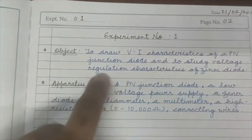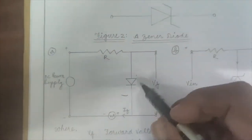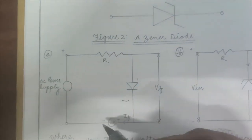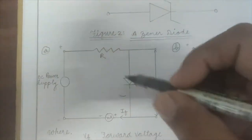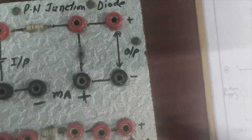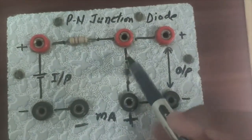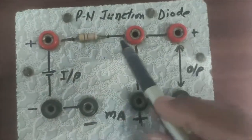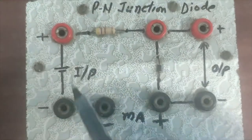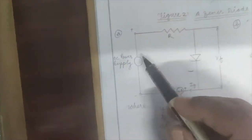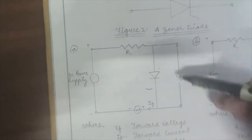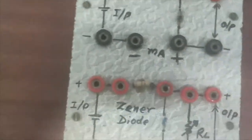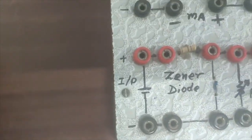The circuit for the VI characteristics of a PN junction diode is very simple. We have a power supply, a resistance, and a PN junction diode all in series. We have the resistance, then the PN junction diode, then the milliammeter — all in series. We supply the input DC voltage, and across the diode we will measure the forward voltage output.